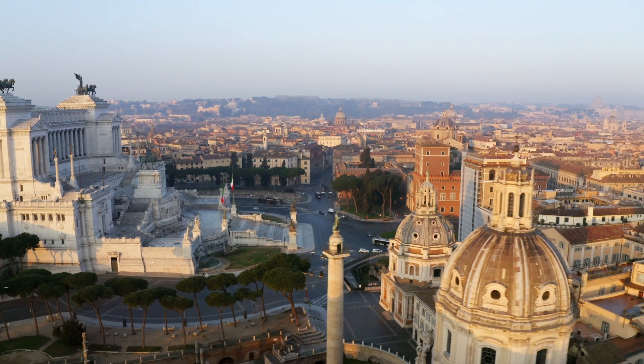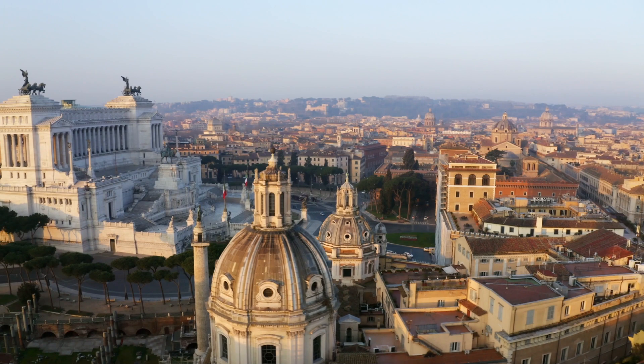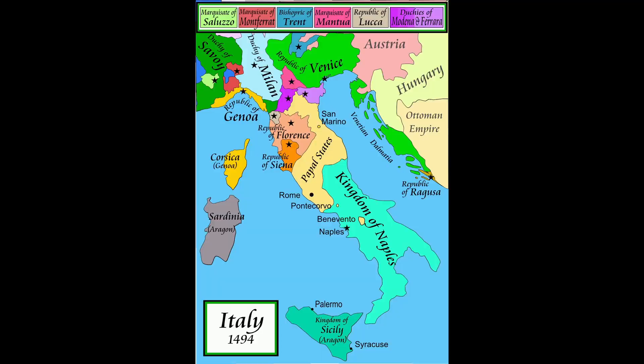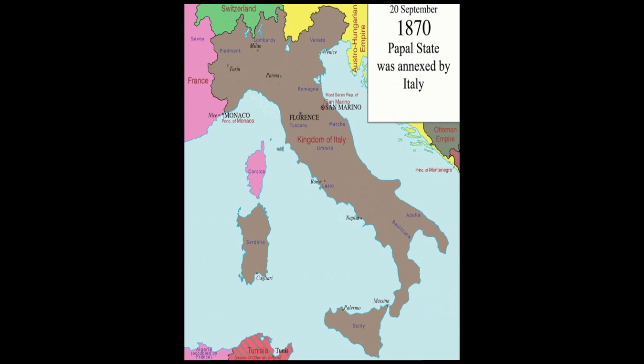Today I'm going to tell you about how Italy became a country. The unification of Italy, also known as Risorgimento, was the 19th century movement that reunited a number of independent Italian states into a single Kingdom of Italy.